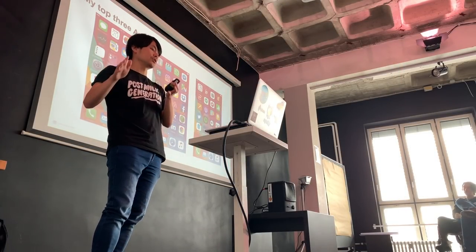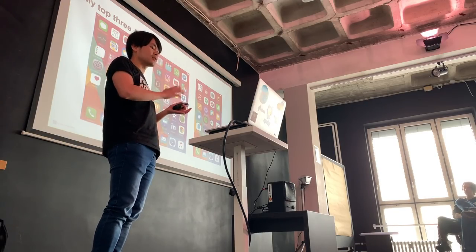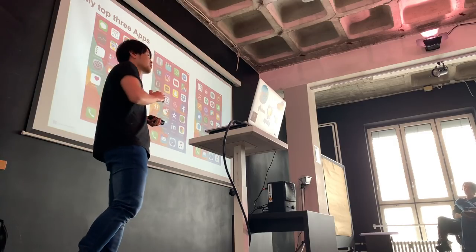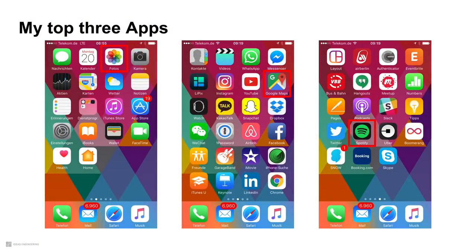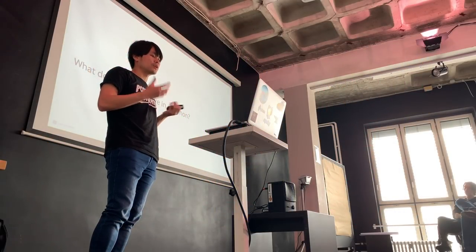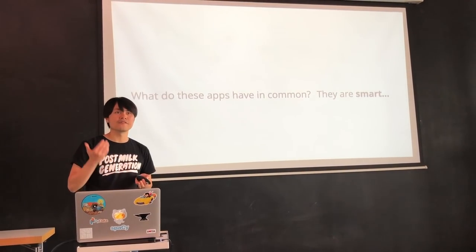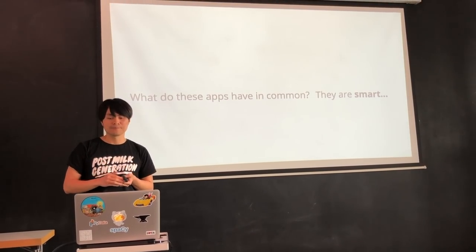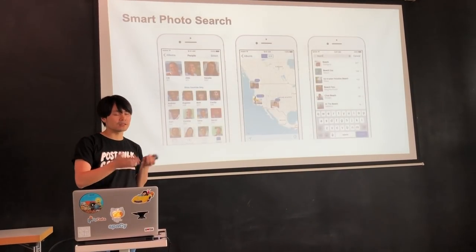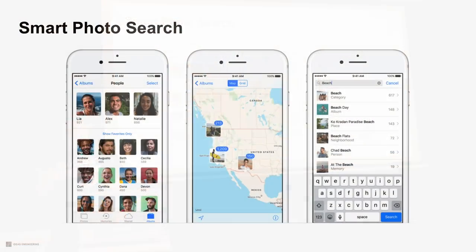Another motivation: looking at my iPhone. This is a screenshot of my three most-used apps: Photos, Google Maps, and Spotify. I picked these because I use them a lot. What do these apps have in common? They are very smart. They're very user-friendly and provide a great user experience.